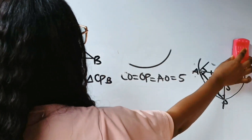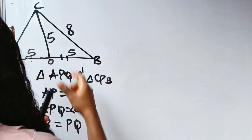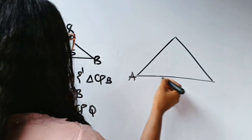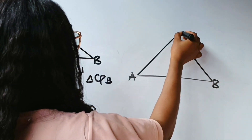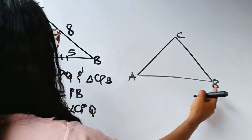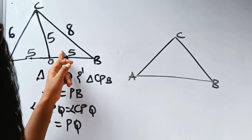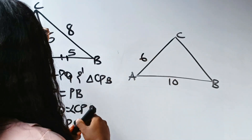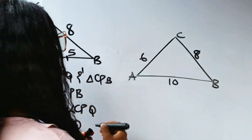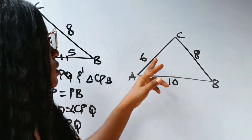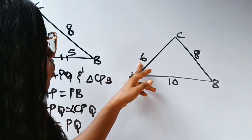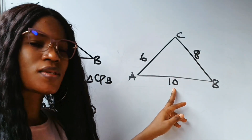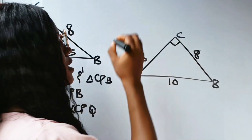So triangle ABC has AB equal to 5 plus 5 which is 10, AC is 6, and CB is 8. We have already confirmed using the Pythagorean theorem that 6 squared plus 8 squared equals 10 squared, which shows that angle C is 90 degrees.